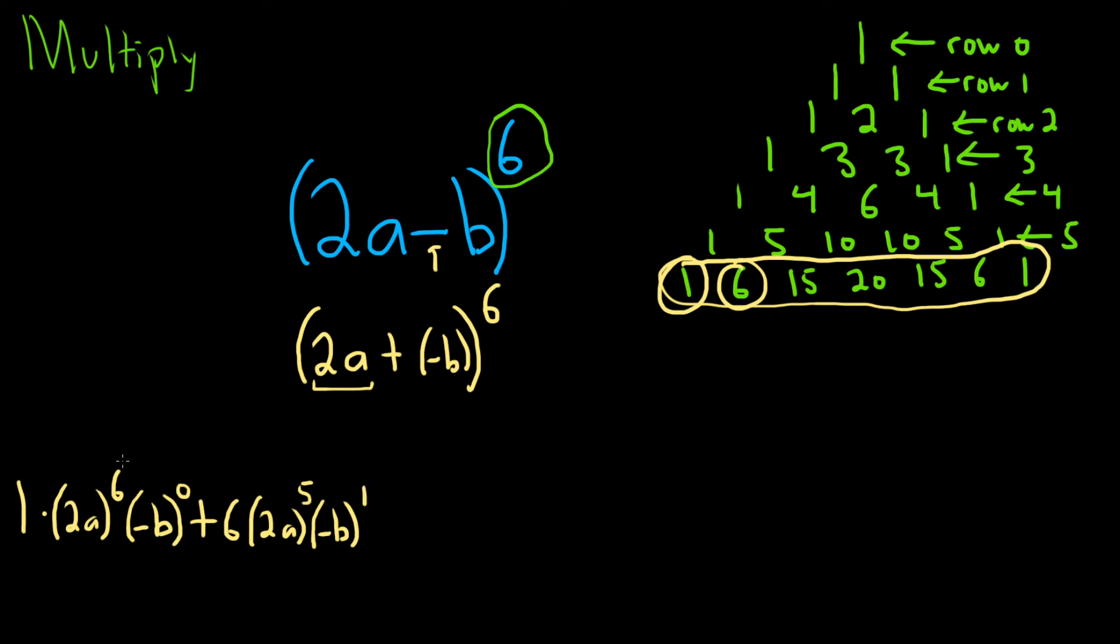So you're starting to see the pattern now, maybe. This one starts at 6 and goes down. 6, 5. The next one will be 4. Starts at 0 and goes up. 0, 1. The next one is 2. The next number is 15. So plus. The parentheses are really important. It's really important to have the parentheses. I purposely picked one with a negative number because it's harder. So this will be 2a to the 4 because you're going down on this one. And this would be negative b to the 2.